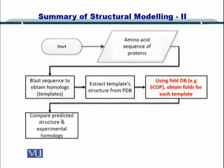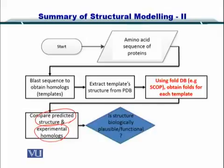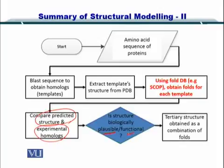Next you compare the predicted structure and experimental homologs. If the structure that is predicted is plausible and functional then you select it, and you try to create a tertiary structure by creating combinations of the folds. And therefore your structure is made.